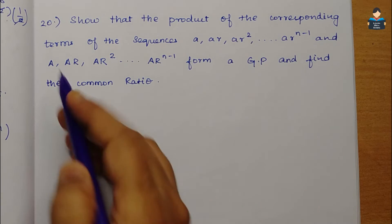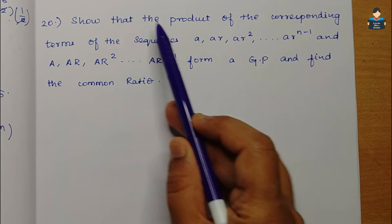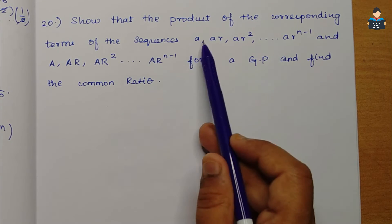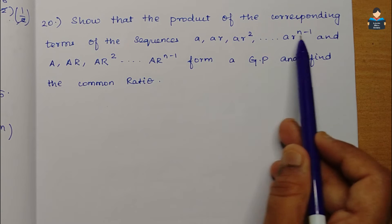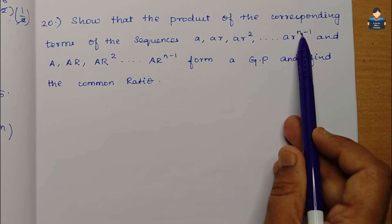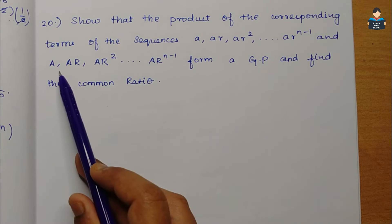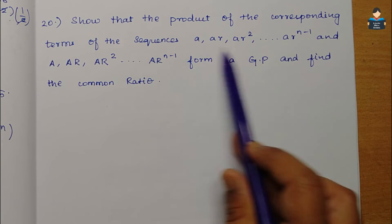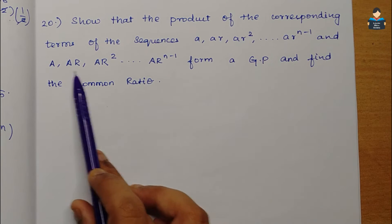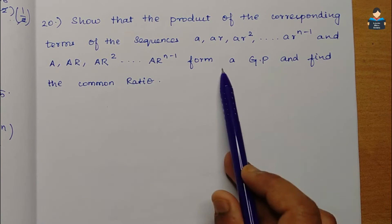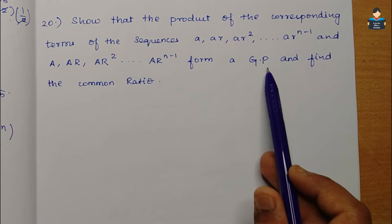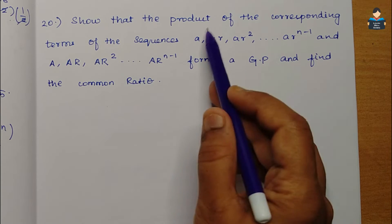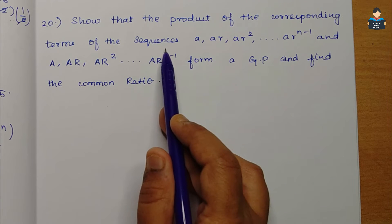Question 20: Show that the product of the corresponding terms of the sequences a, ar, ar², ..., arⁿ⁻¹ and A, AR, AR², ..., ARⁿ⁻¹ forms a GP, and find the common ratio.